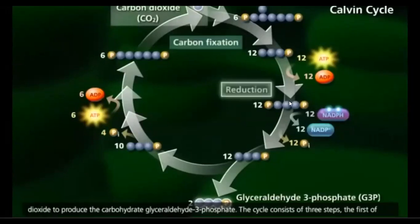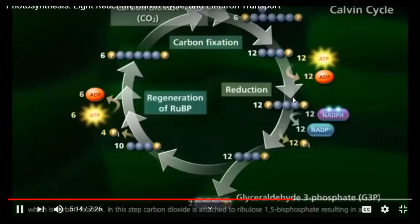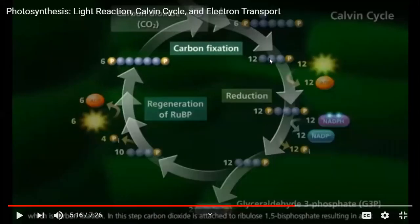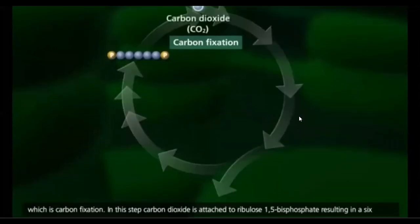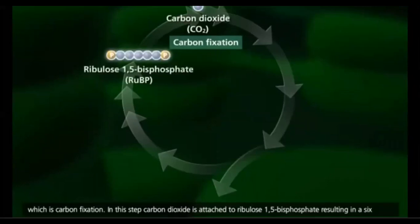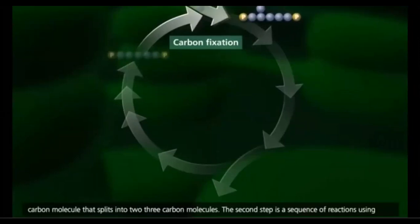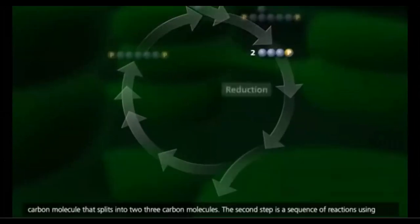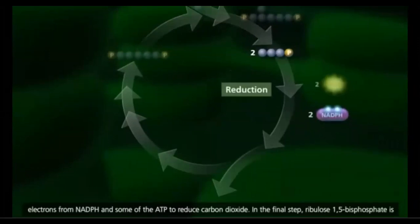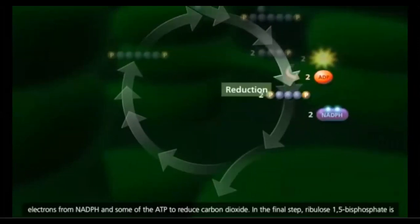The Calvin cycle consists of three steps. The first is carbon fixation: carbon dioxide is attached to ribulose 1,5-bisphosphate, resulting in a six-carbon molecule that splits into two three-carbon molecules. The second step is a sequence of reactions using electrons from NADPH and some of the ATP to reduce carbon dioxide.